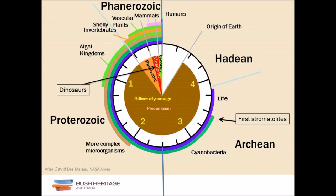Moving forward in time, we get more complex organisms in the Proterozoic and algae near the end. It's not until the Cambrian explosion — where the Phanerozoic begins — that you get a radiation of life. To put it in perspective: if you put your arm out and start time at your nose to the tip of your fingers, a shaving from your fingernail is essentially humans. And 80% of that period is dominated by microbial life — that is stromatolites.